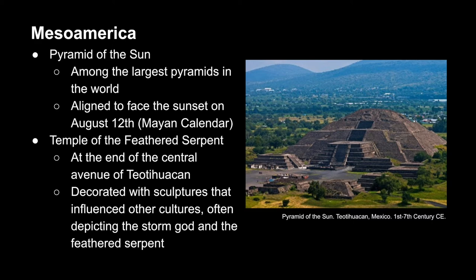At one end of the long central avenue of Teotihuacan is the Temple of the Feathered Serpent. Many of the sculptural elements found throughout this temple affected cultures that came afterward. For instance, there were many relief sculptures depicting the head of the storm god, which had goggle-like eyes and a scaly face, in addition to the feathered serpent. Teotihuacan itself was abandoned after burning in a mysterious fire in about 750 CE; however, both of the gods just mentioned were adopted by later cultures throughout ancient Mexico.